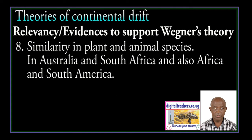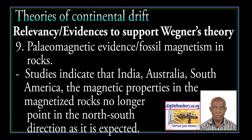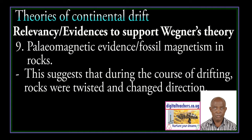Similarity in plant and animal species in Australia and South Africa, and also in Africa and South America. Paleomagnetic evidence, or fossil magnetism in rocks: studies indicate that in India, Australia, and South America, the magnetic properties in magnetized rocks no longer point in the north-south direction as expected. This suggests that during the course of drifting, rocks were twisted and changed direction.